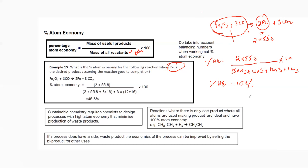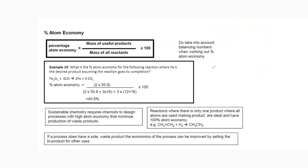What is the purpose of percentage atom economy? Sustainable chemistry requires chemists to design processes with high atom economy. For example, you may have two different processes to prepare the same product, like ethanol. One method is by fermentation: C₆H₁₂O₆ decomposes into two molecules of ethanol (C₂H₅OH) plus CO₂.